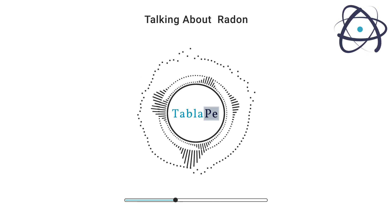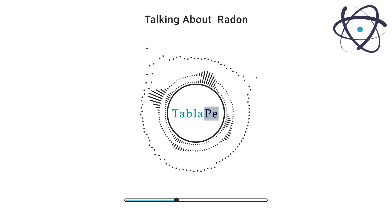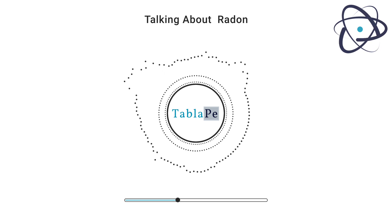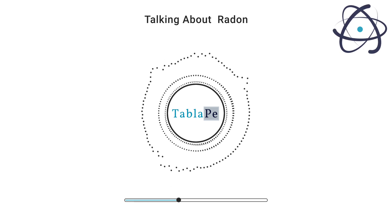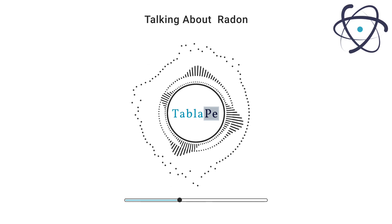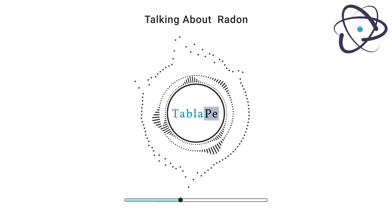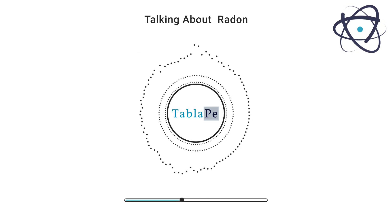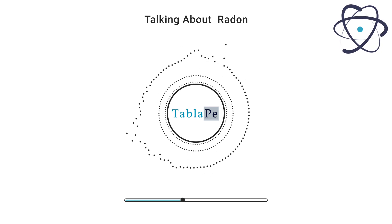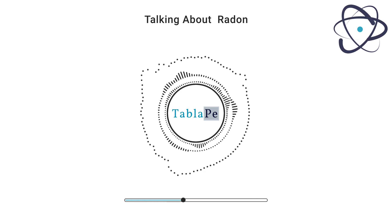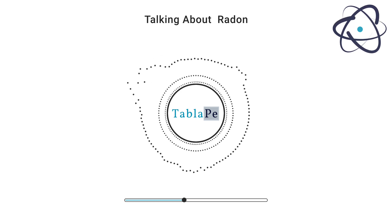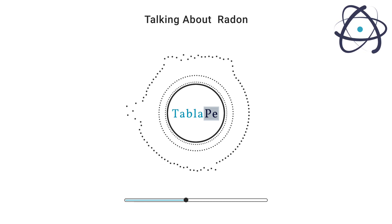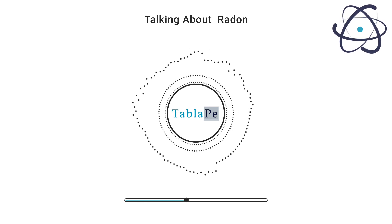While radon is primarily a product of radioactive decay in nature, it can also be produced artificially, often in nuclear reactors or particle accelerators by bombarding lighter elements like bismuth or lead with high-energy particles. These processes generate short-lived radon isotopes which find applications in various scientific and industrial fields.